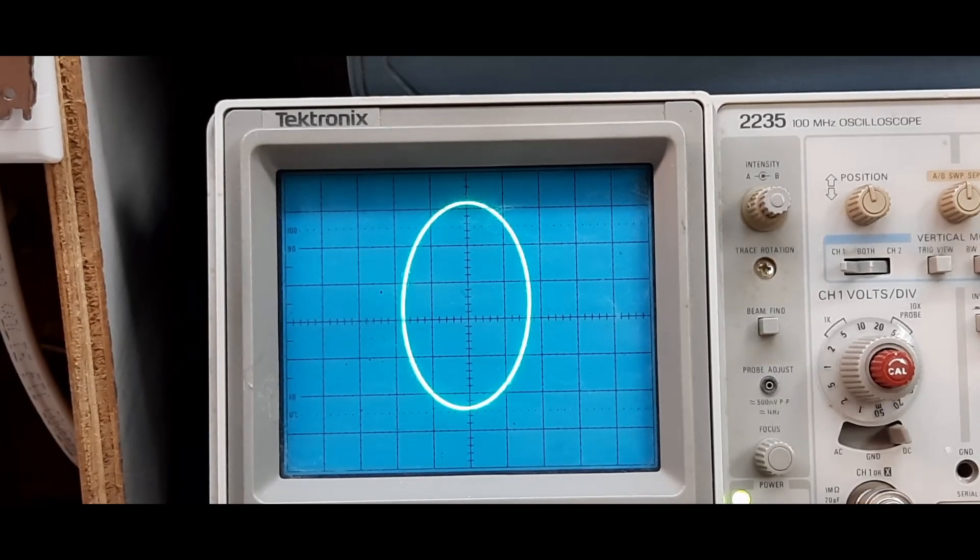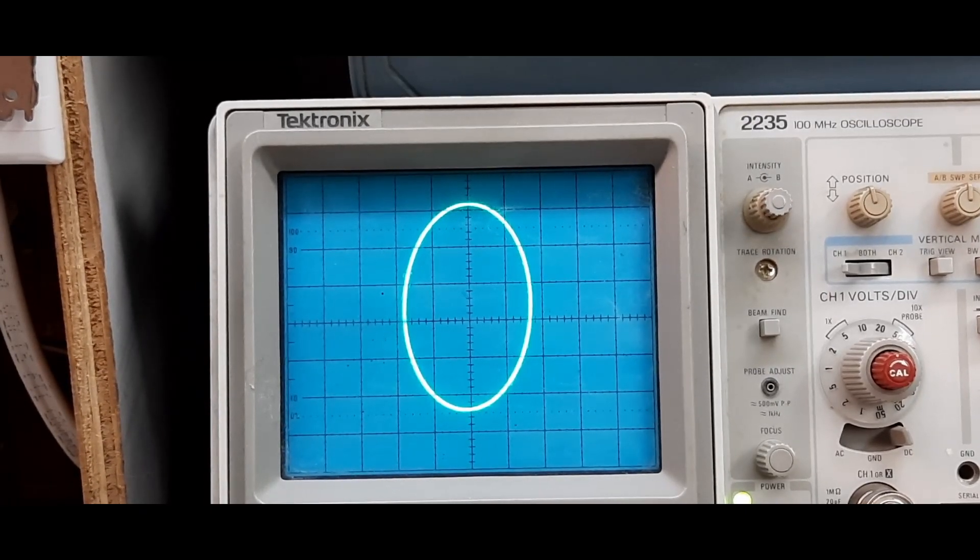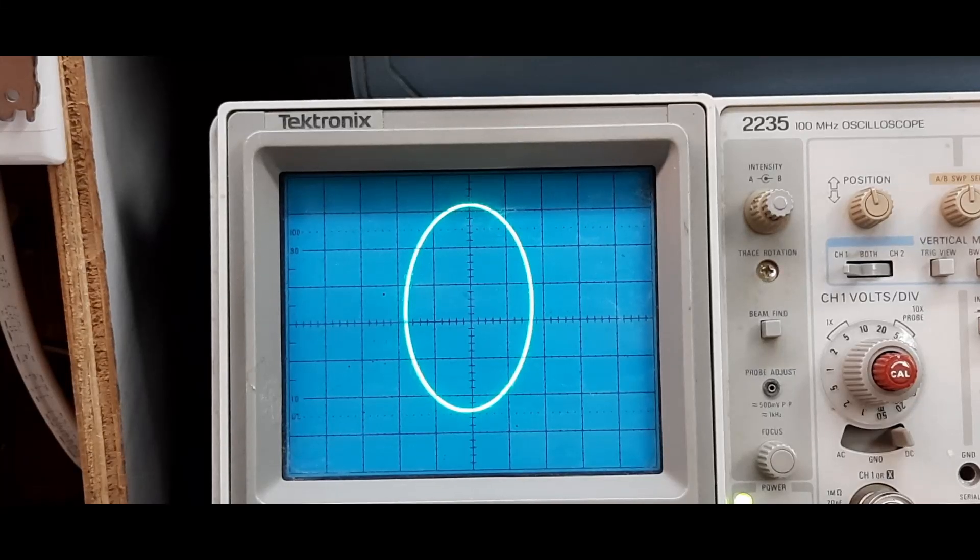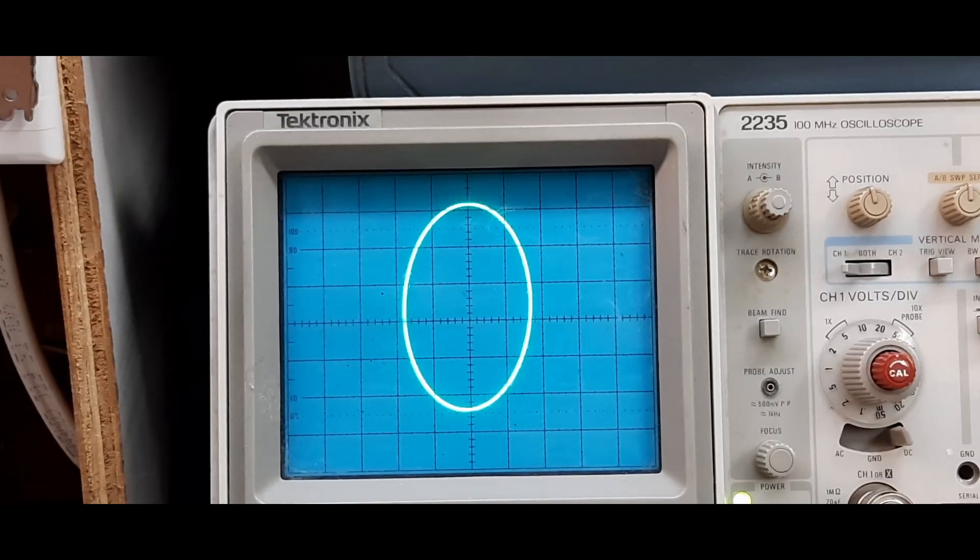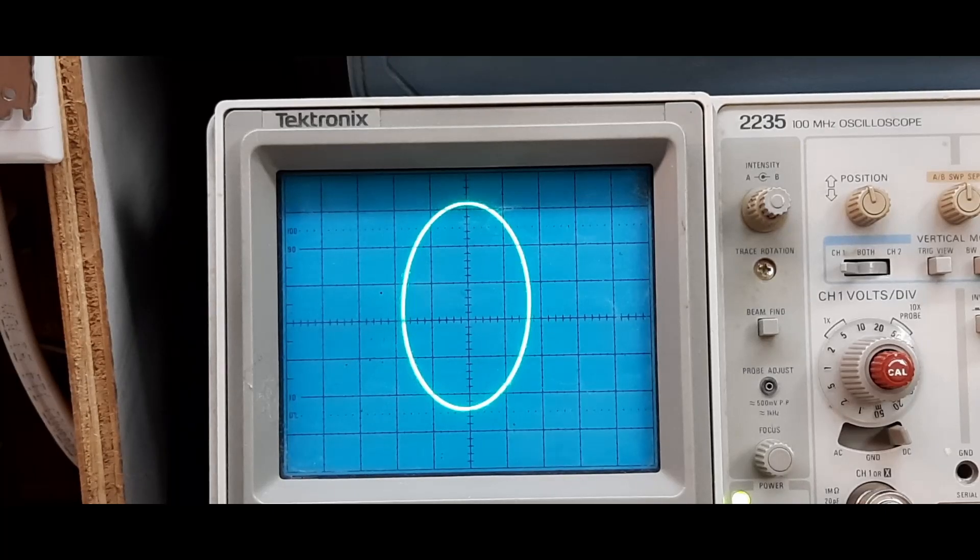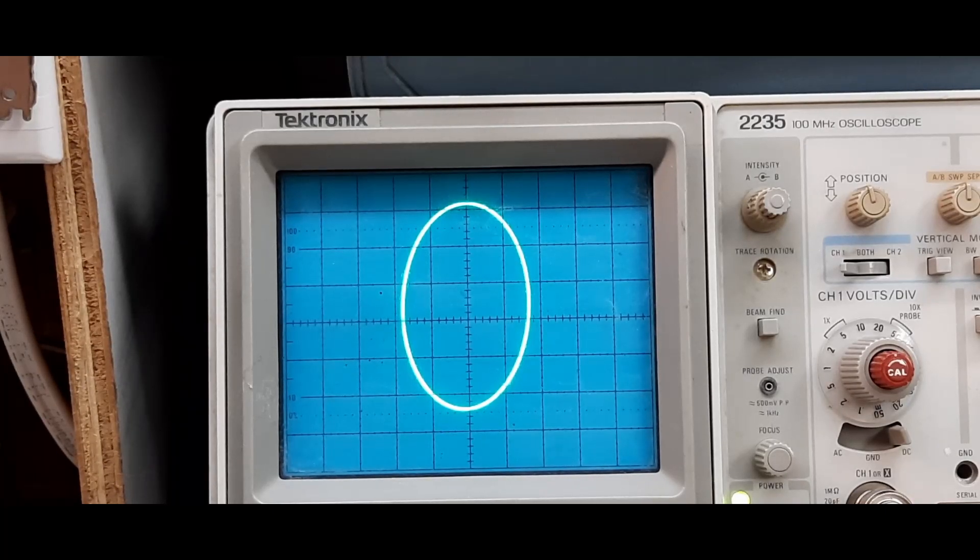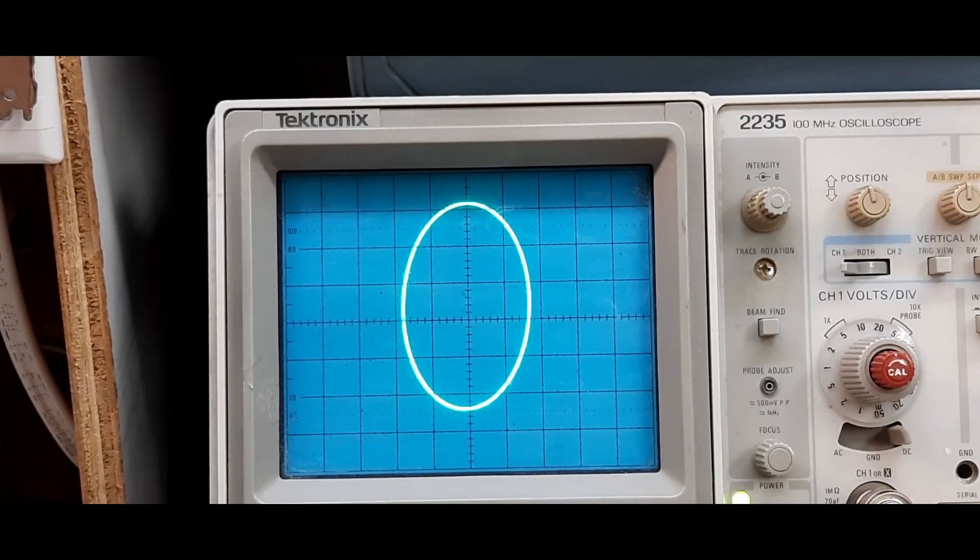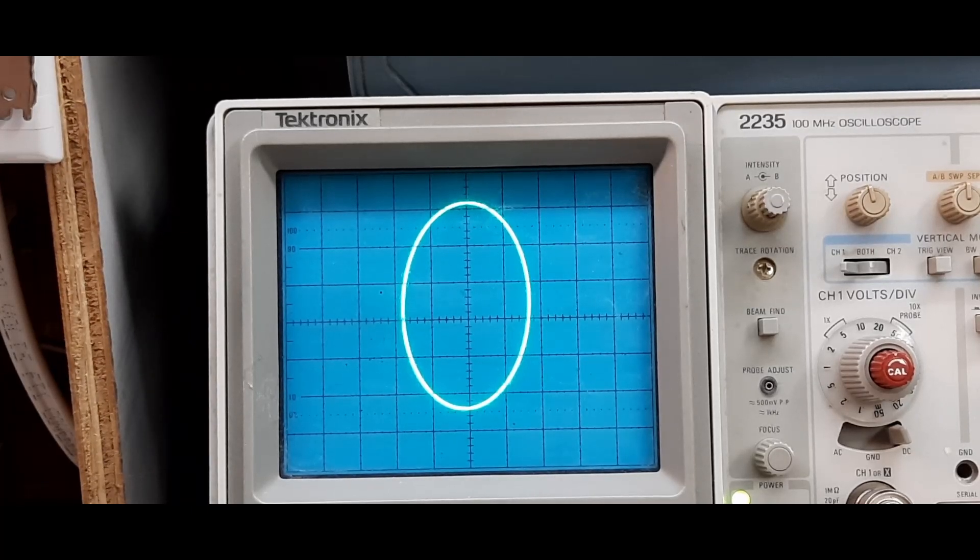Looking at the scope, that's exactly what a capacitor should look like. It should be a circular or circular shaped, nothing wrong there. Now let's connect the bad capacitor. There we go.